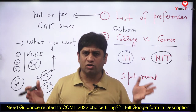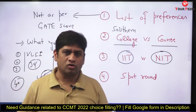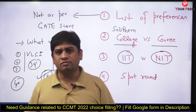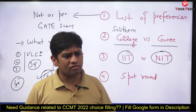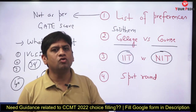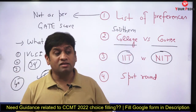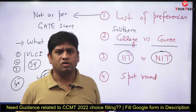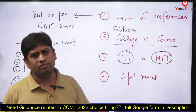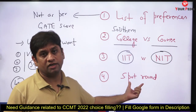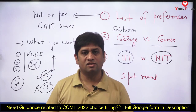The fourth point is the spot round. Many students are unaware that a spot round exists. In the spot round you sometimes get some of the best options. You need to give a new preference order for the spot round — the old order does not carry over. Unlike COAP, where you can attend the spot round only if you haven't accepted anything previously, in CCMT you can go to the spot round even if you have already accepted an option. Consider the spot round a hidden opportunity.